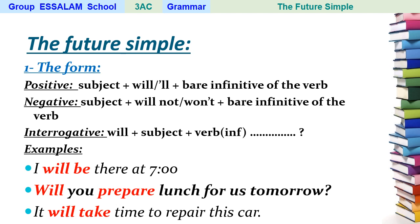We cannot say 'You will prepare lunch for us tomorrow' as a question — we must start with 'will' plus the subject pronoun plus the verb in the infinitive plus the rest of the sentence plus question mark. Sentence number three: 'It will take time to repair this car.' This is the positive form: subject 'it' plus 'will' plus the verb in the infinitive 'take' plus the rest of the sentence.